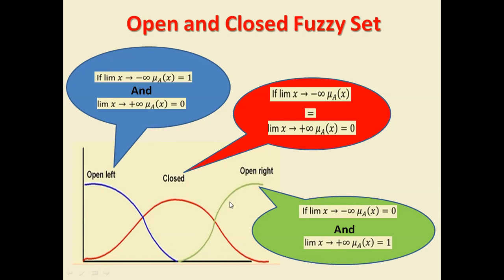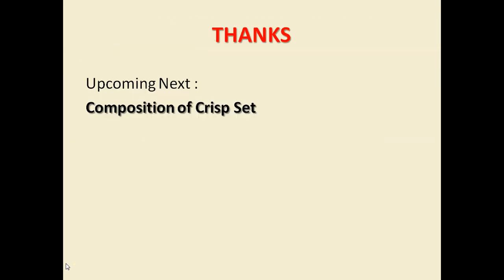For open right, when x moves towards positive infinity, the membership value will always be one. Towards negative infinity, you get the value zero. So that region is called an open right fuzzy set. For closed fuzzy sets, as x tends to negative infinity, the membership value is zero, and as x moves towards positive infinity, the membership value is also zero. So for both positive and negative infinity the membership value is zero, and this fuzzy set is called a closed fuzzy set.